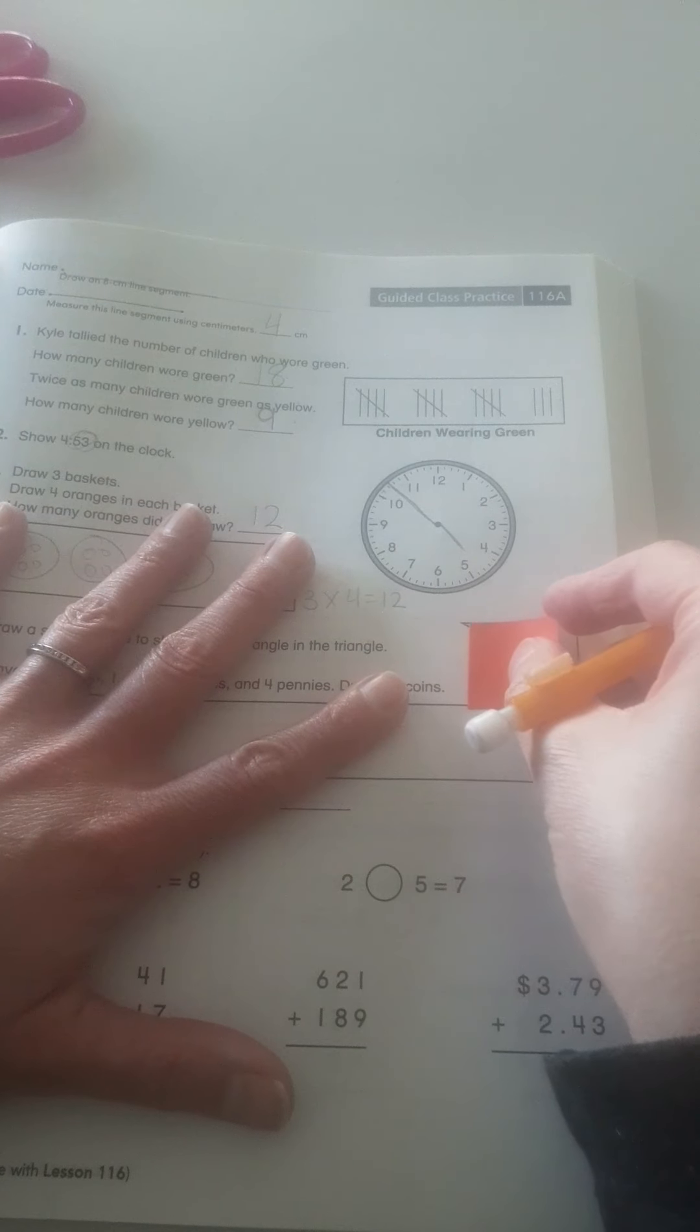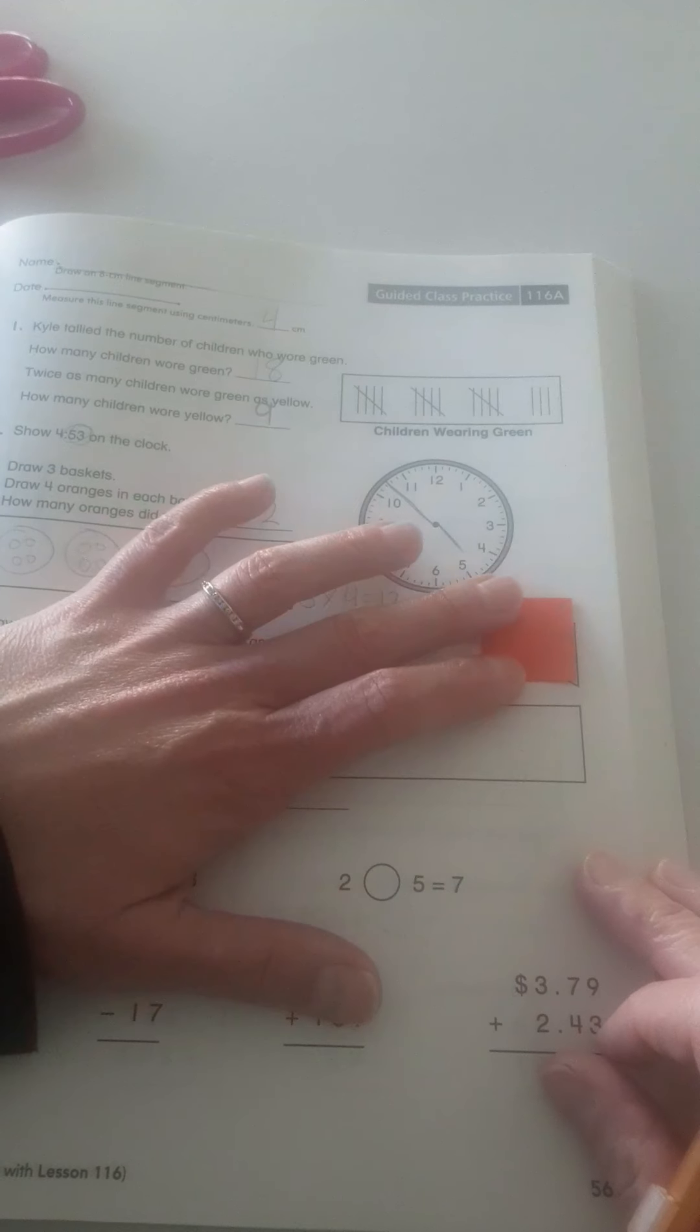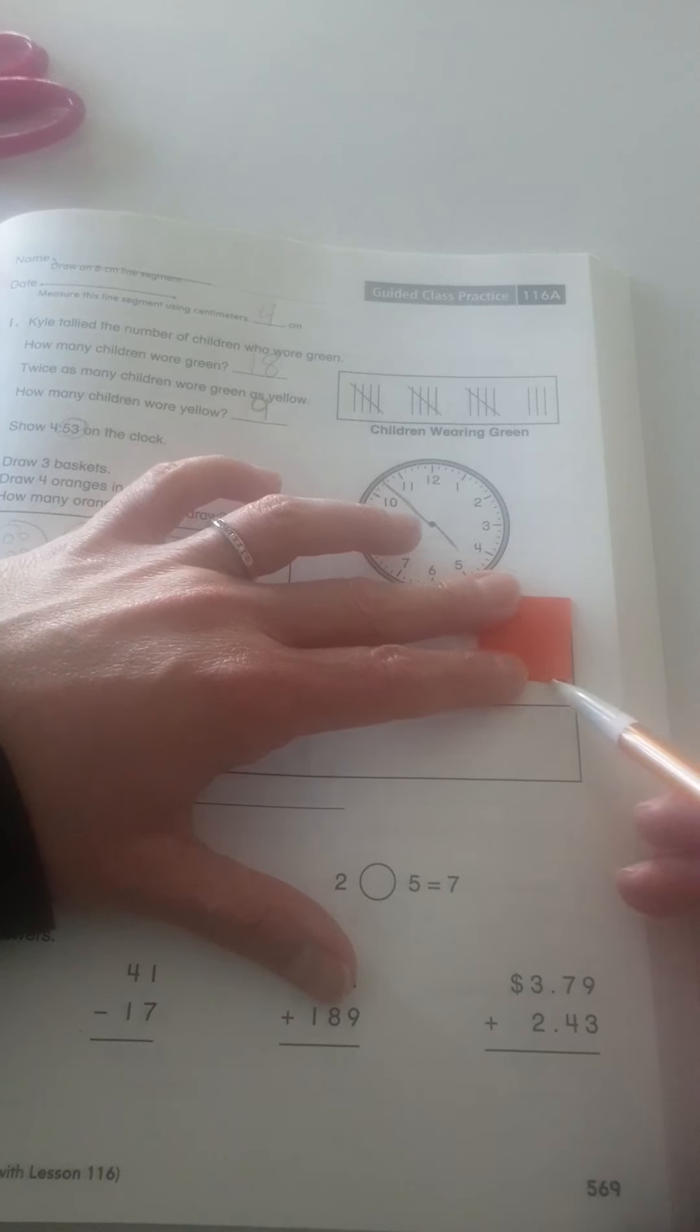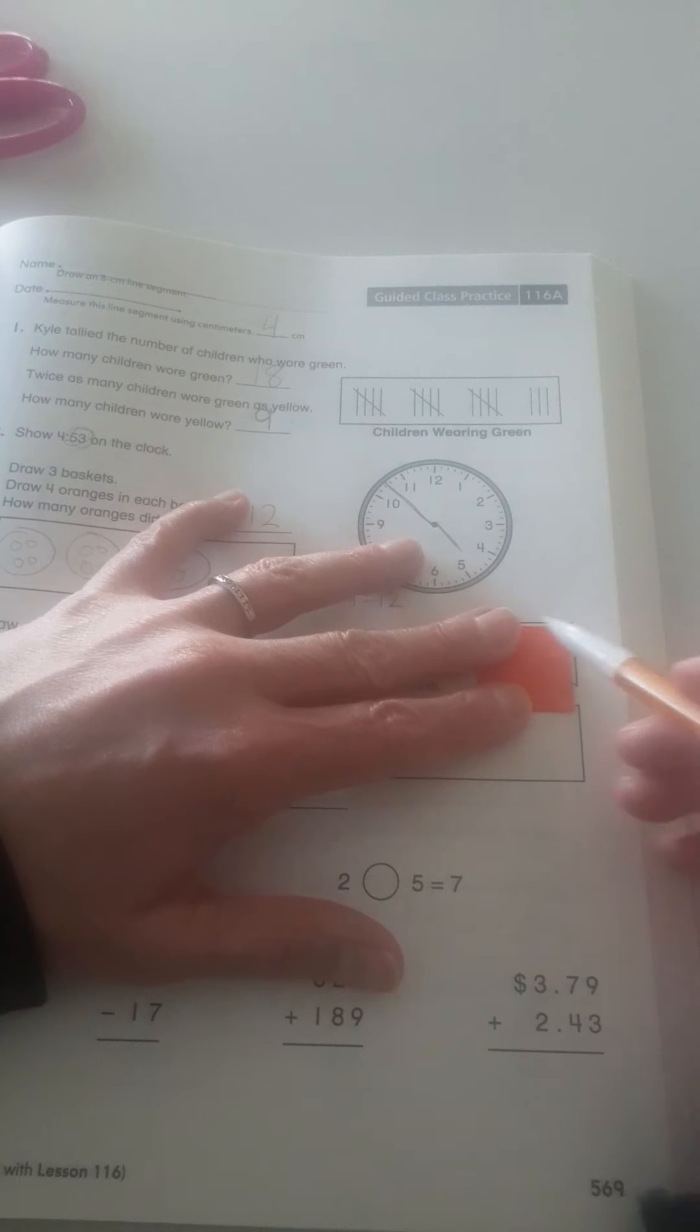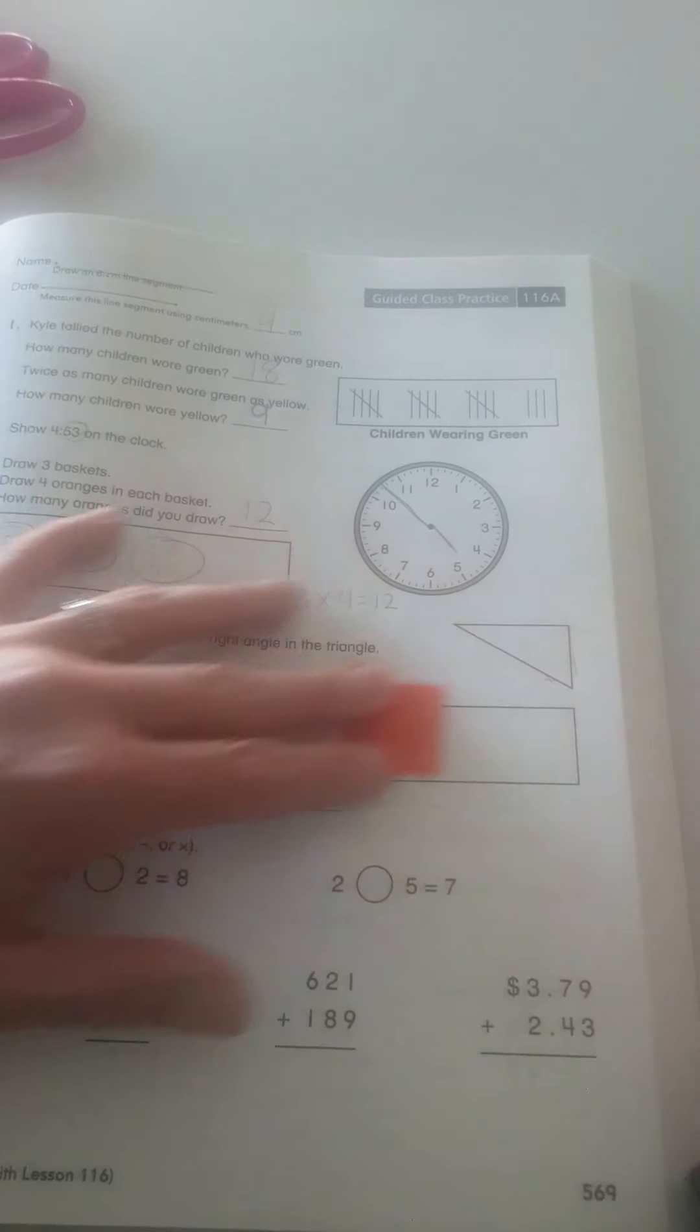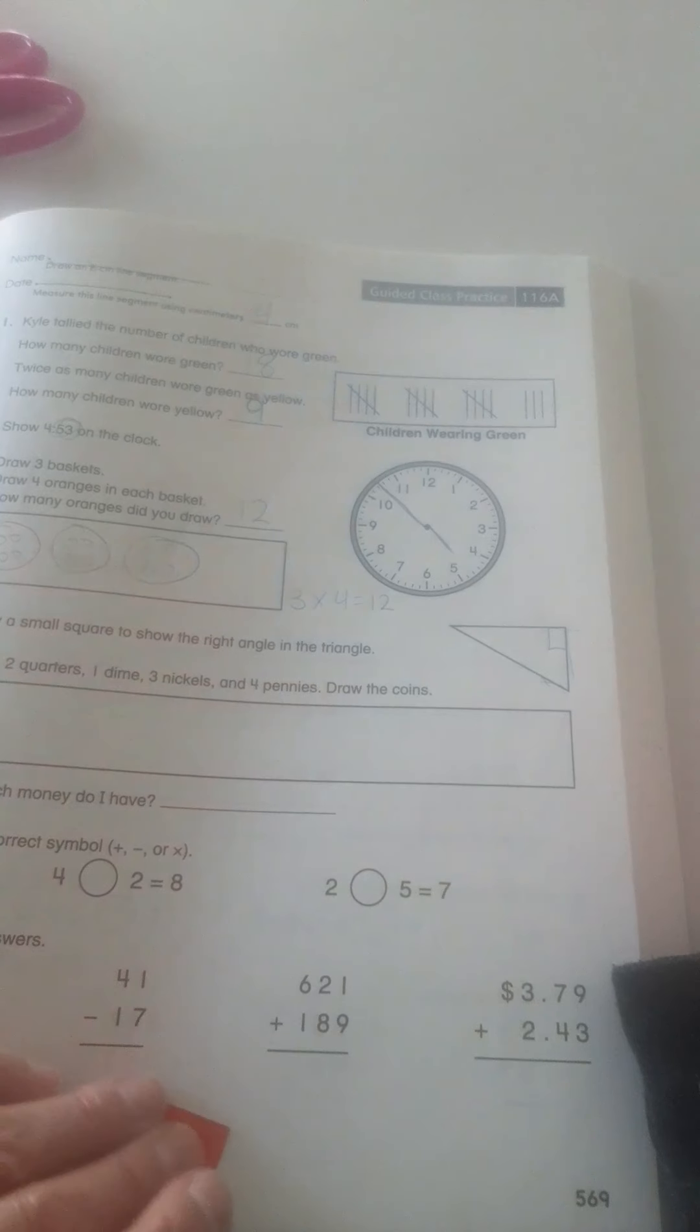So, I'm going to use one of these. Could this be a right angle? No. How about this one down here? Well, no, that doesn't work because this line is going up. But if I look at this line, is this an L right here? Yeah. So, that would be our right angle for the triangle.